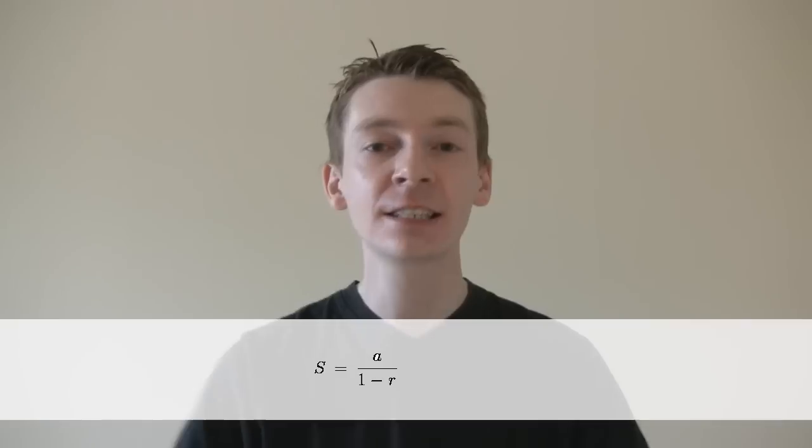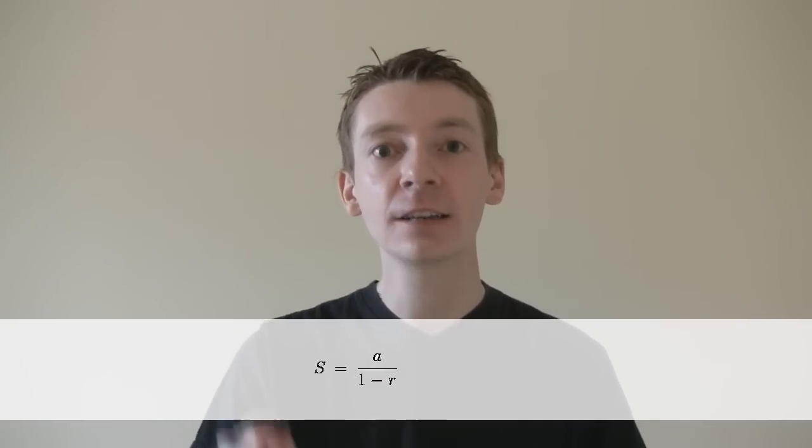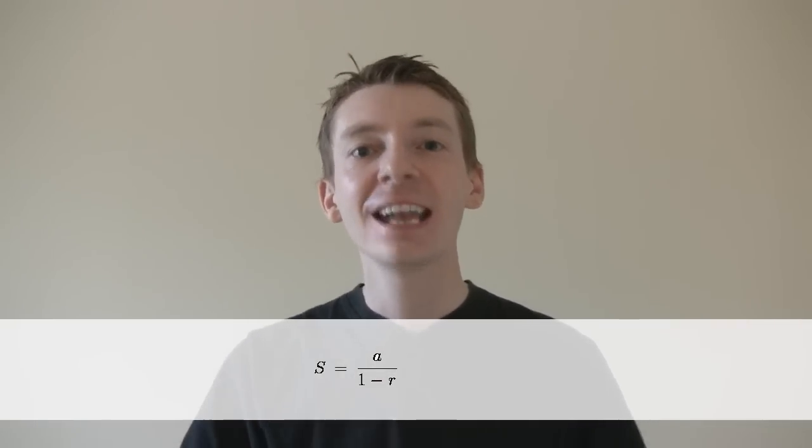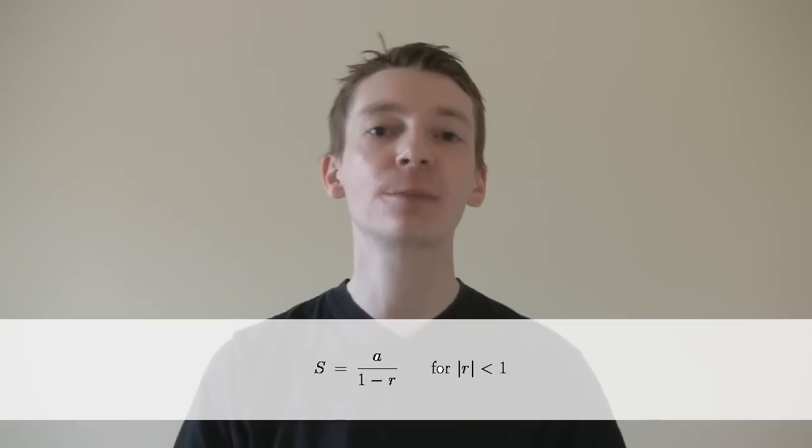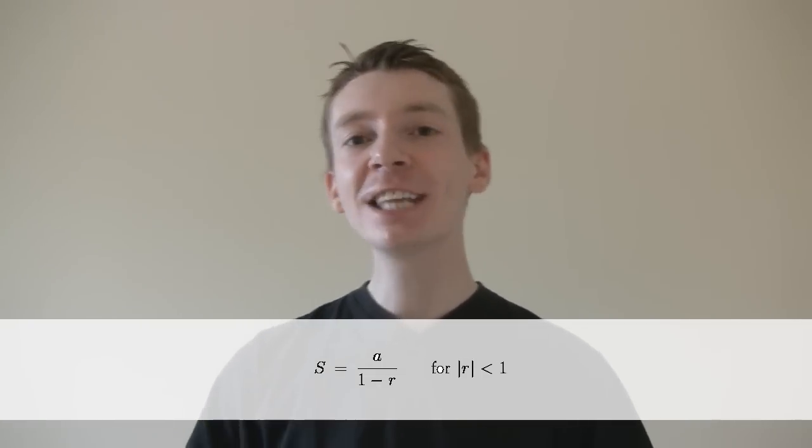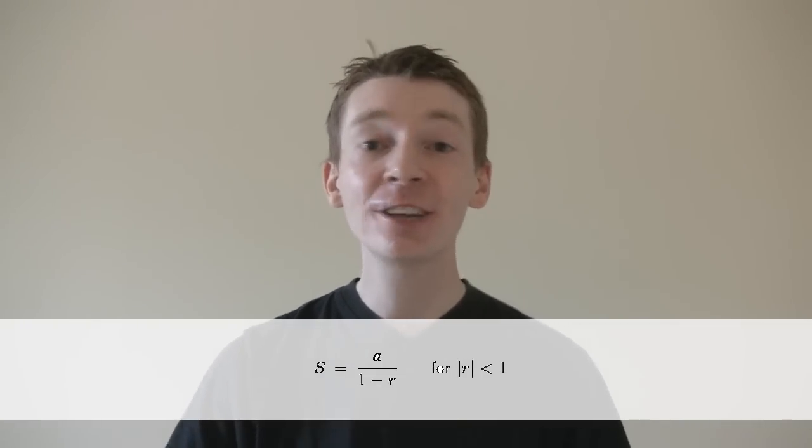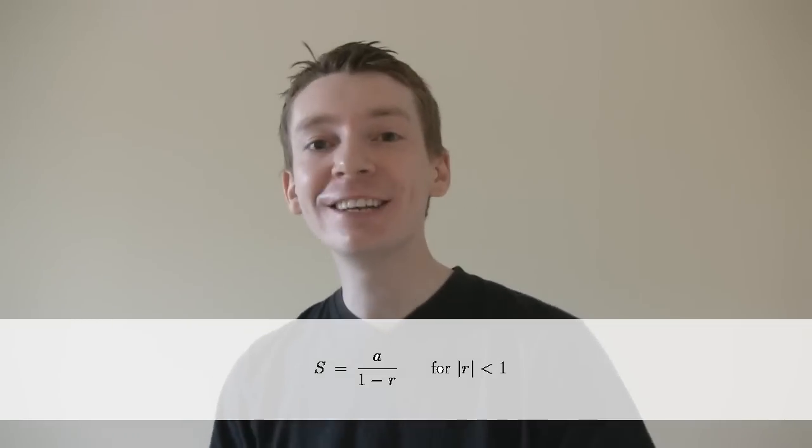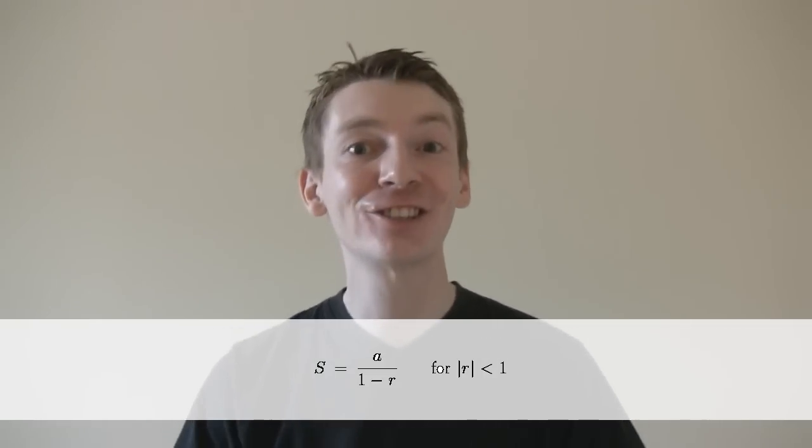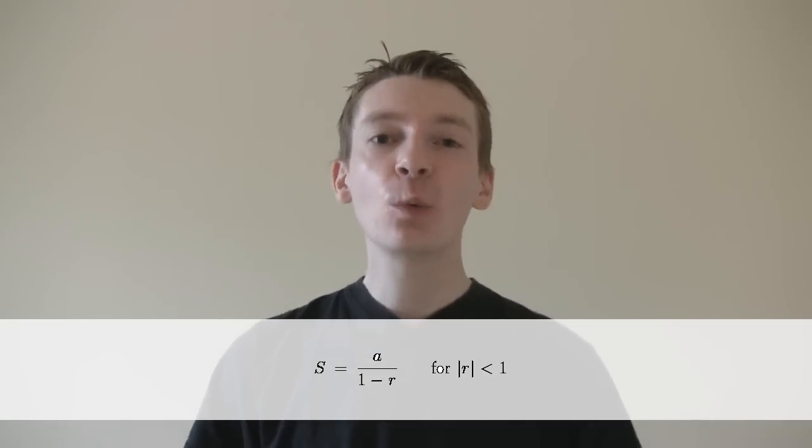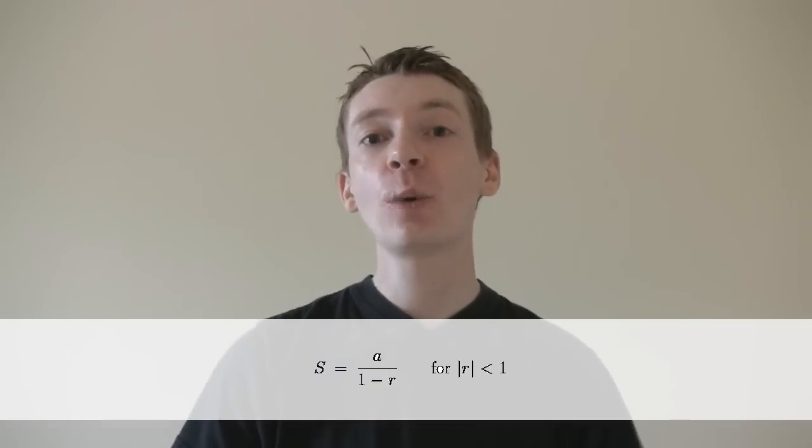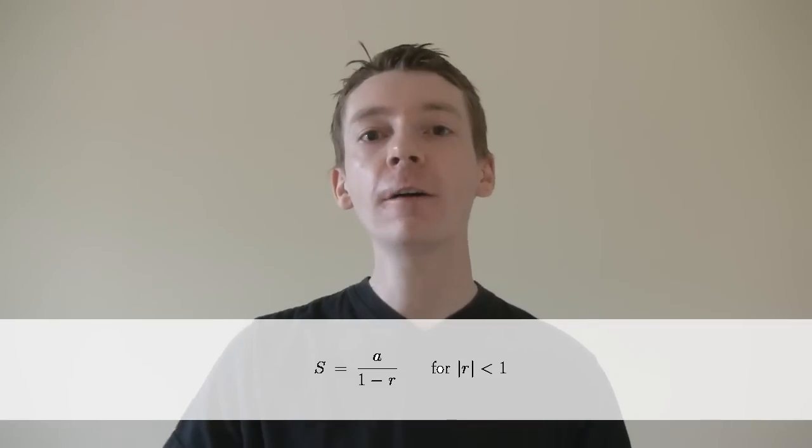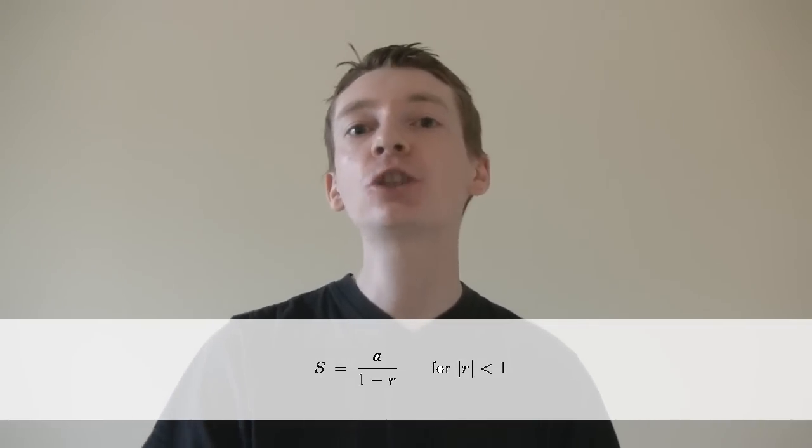So, for the limit to exist, each term has to be getting smaller and smaller. In other words, the common ratio has to be less than 1. If the series is divergent, you can still apply that formula, and you'll get a value. But it won't be the limit of the series, because the limit doesn't exist. So, when you apply the formula to convergent series, you get the limit. So when the common ratio was a half, we got the limit of 2.